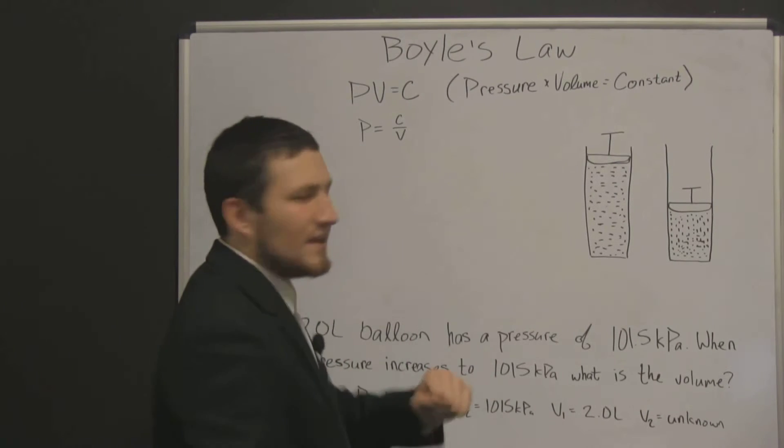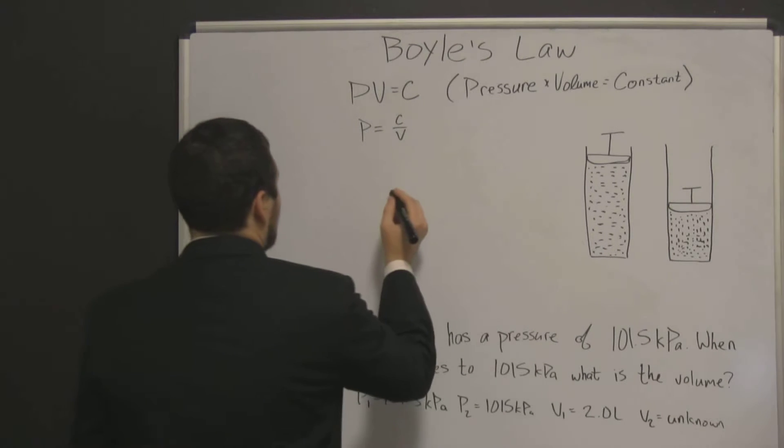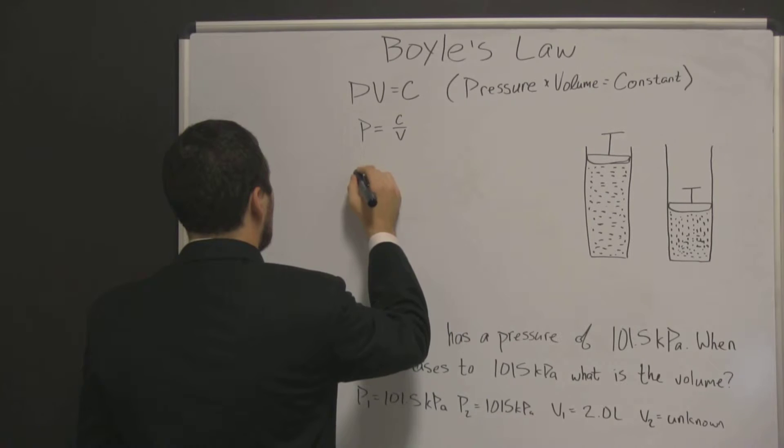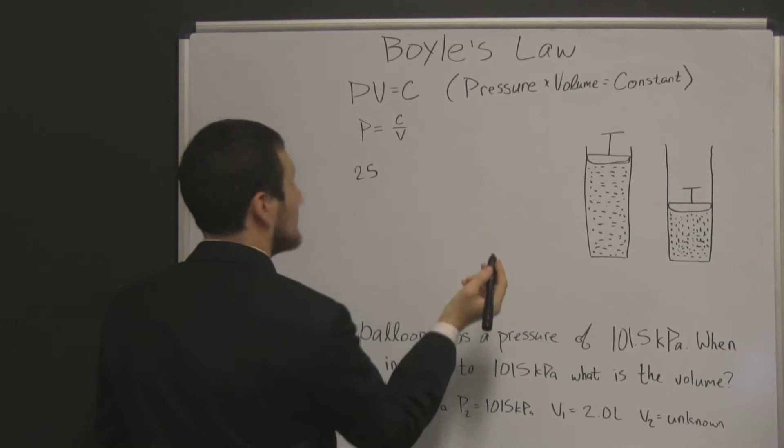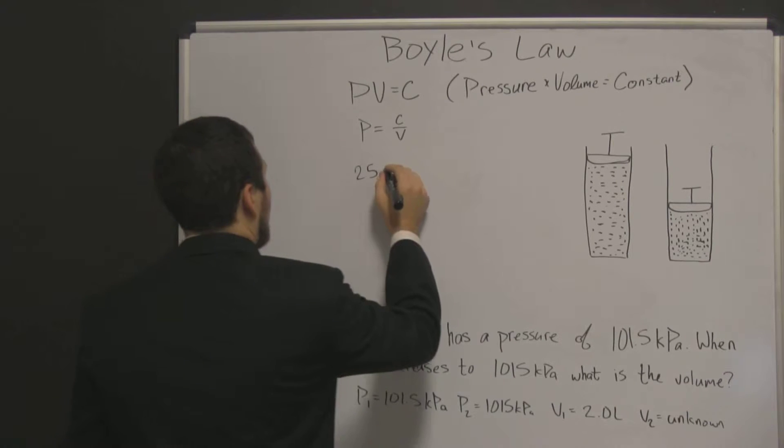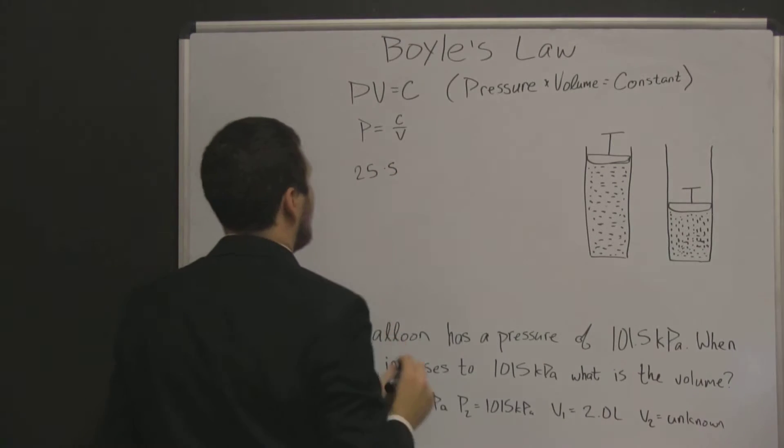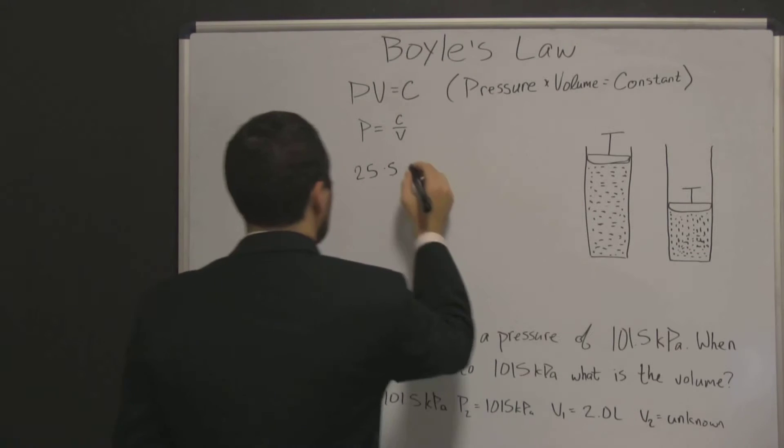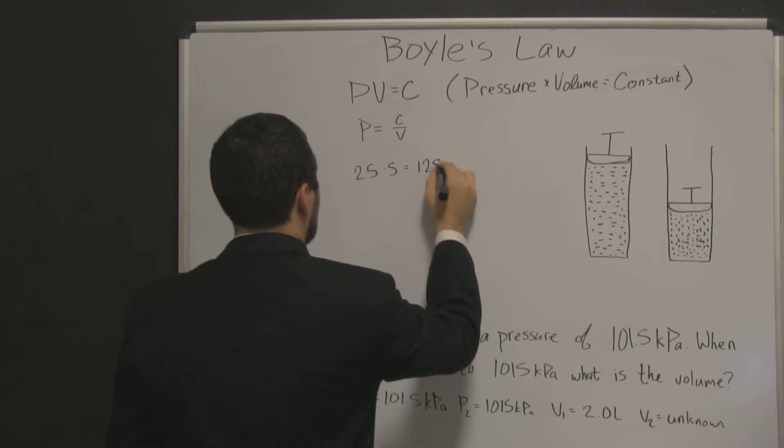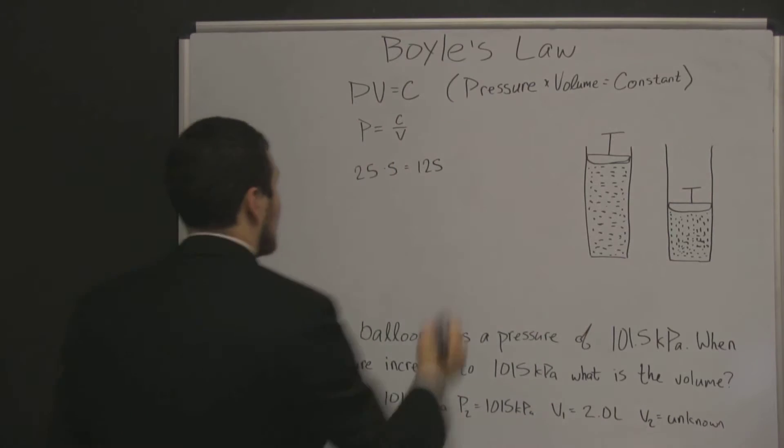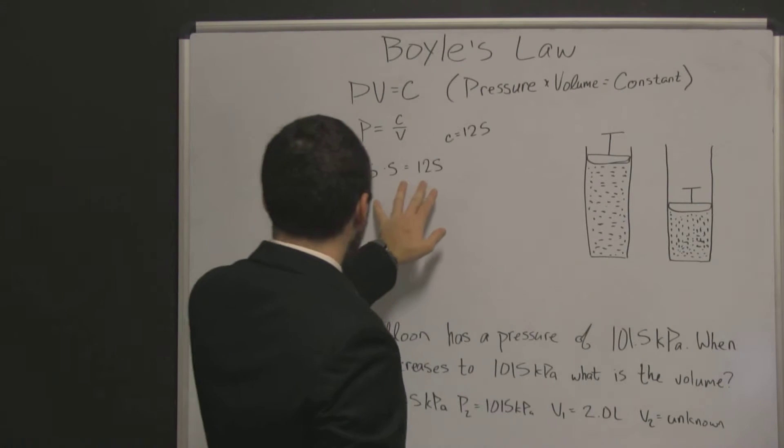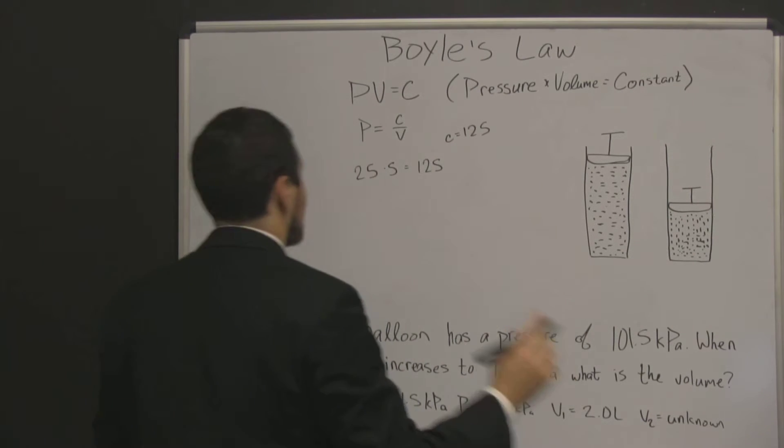So let's take an example. Let's say that we have a pressure of 25 pascals, pascals is the unit for pressure, and a volume of 5 liters, and that's equal to 125. So our constant in this case, C is equal to 125. The constant changes, but we know that it always stays constant.